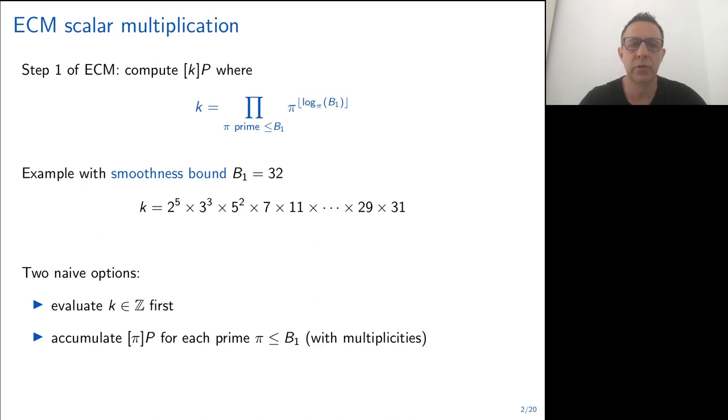I will not enter into the details of ECM by lack of time, but the only thing you need to know is that step one of ECM simply consists of computing a very big scalar multiplication k times P, where P is a point on an elliptic curve. And k is a special number that is the product of all the primes up to some predetermined bound B1, actually all the prime powers.